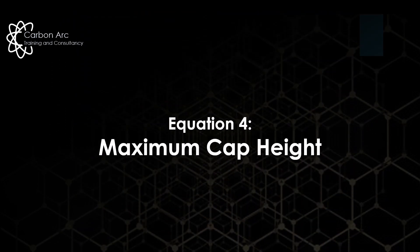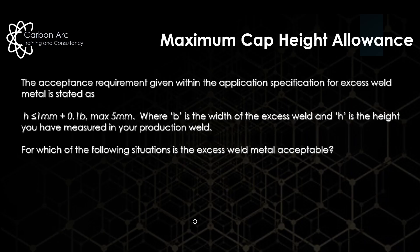Our final equation is maximum cap height. This is normally the most complicated to explain in C-SWIP classes, but it's fairly straightforward if you take it in two parts. Questions are normally asked with a lot of text to read, but really the only thing you need is the equation and the values to insert.